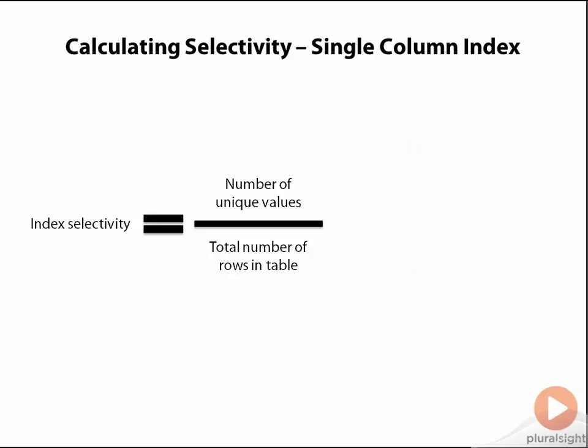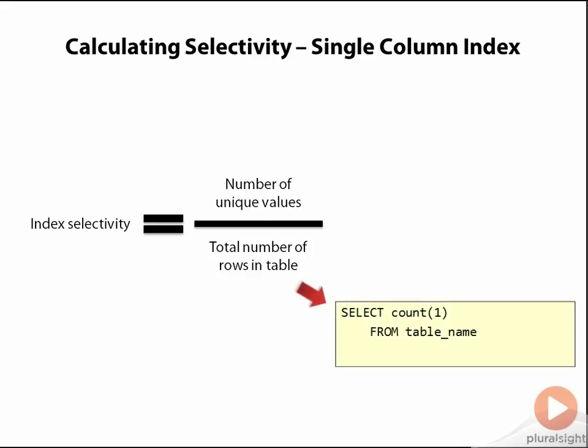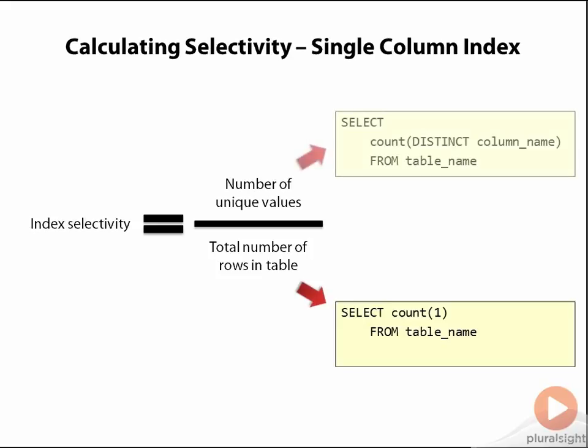So how do we put some numbers to these values? Let's take the case of a single column index first, because that's the easiest to understand. The denominator is simply the number of rows in the table, and we can just do a count over all the rows in the table to get this value. For the numerator, what we want to do is count all the distinct values in the column. The way we do this is to use the syntax shown — we have our count function, and inside we're doing a distinct select over the column name. Putting these two values together, we get a measure of the selectivity of this column.